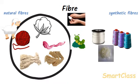Flax is also a plant that gives natural fibers. The fibers obtained from the flax plant are called flax fibers. The fibers are obtained from the stem of the flax plant. Flax fibers are used for making fabric, and the cloth made from the stem fibers of flax is called linen. Linen is used for making bed sheets, etc. Thus, in addition to cotton, flax plants are also cultivated in fields to obtain fibers for making fabrics.